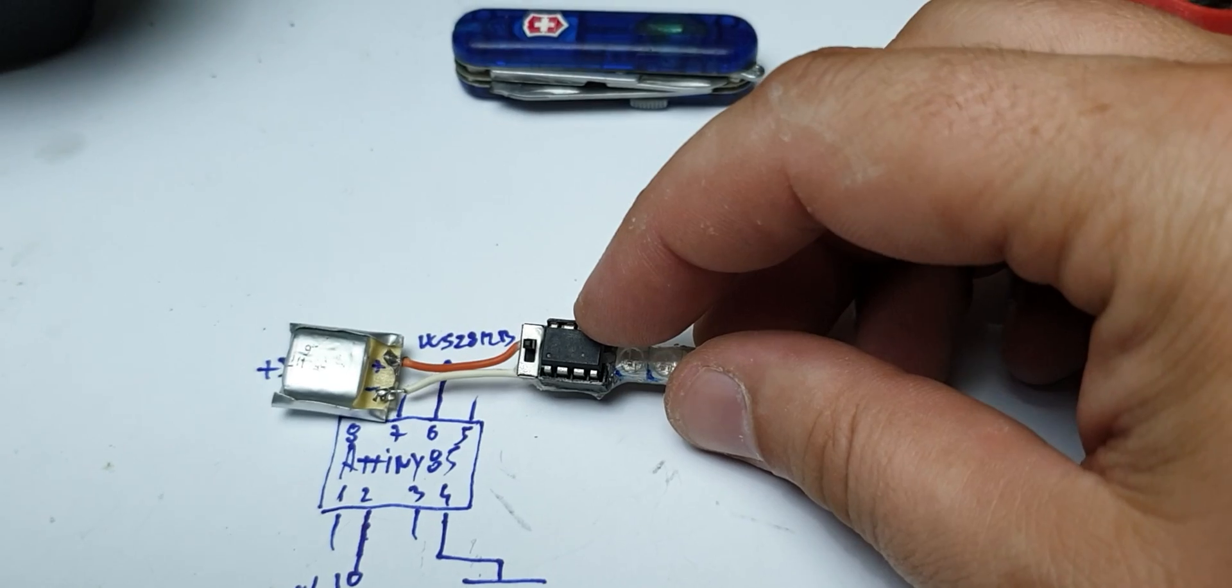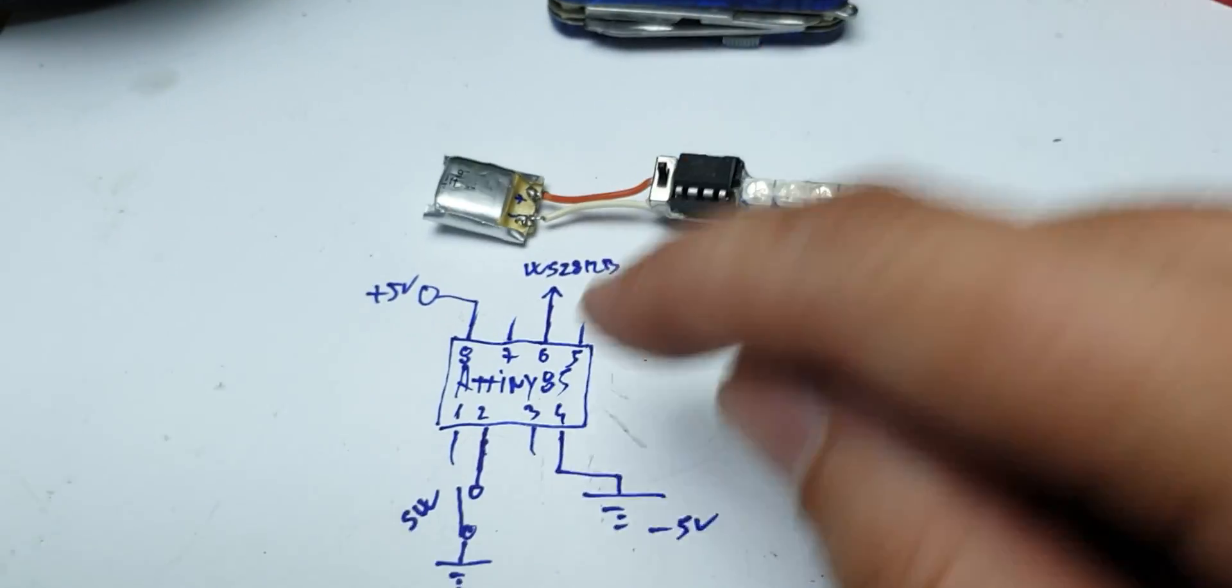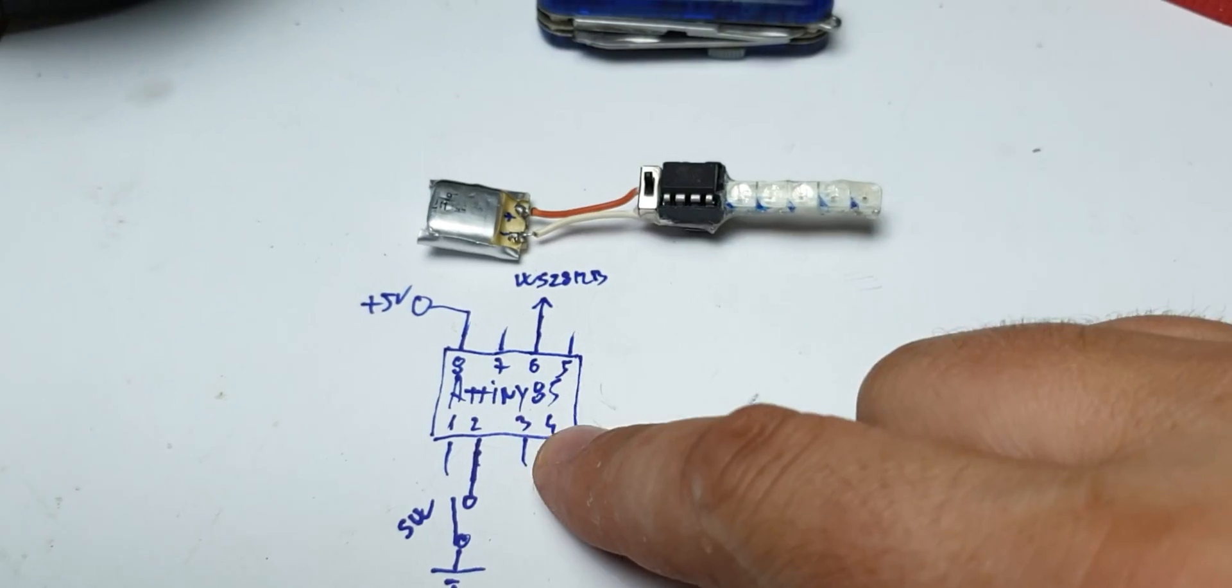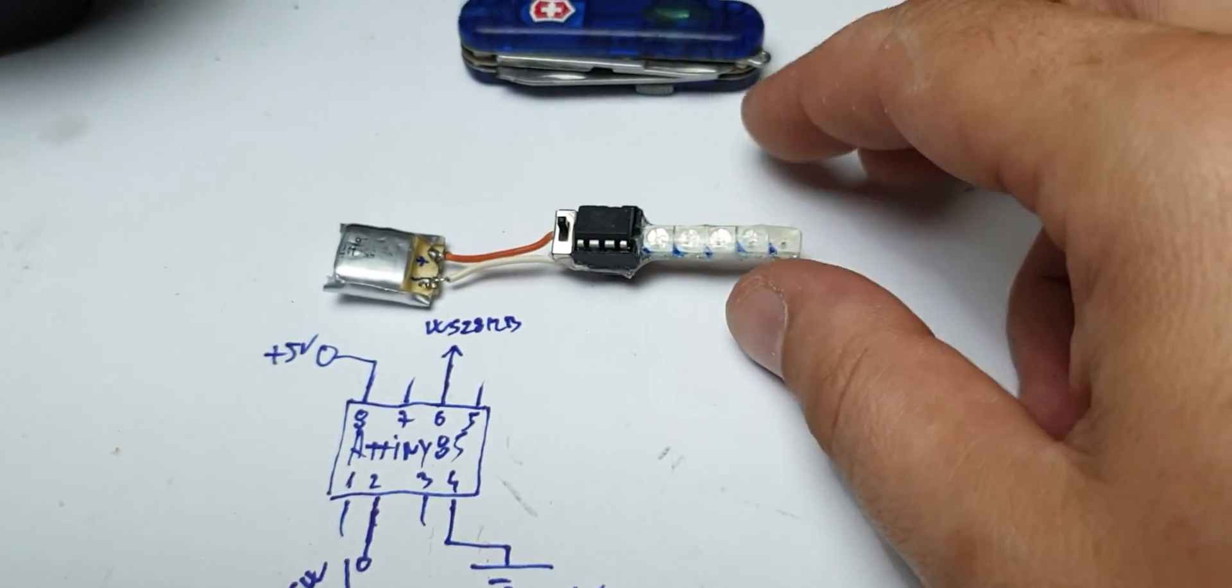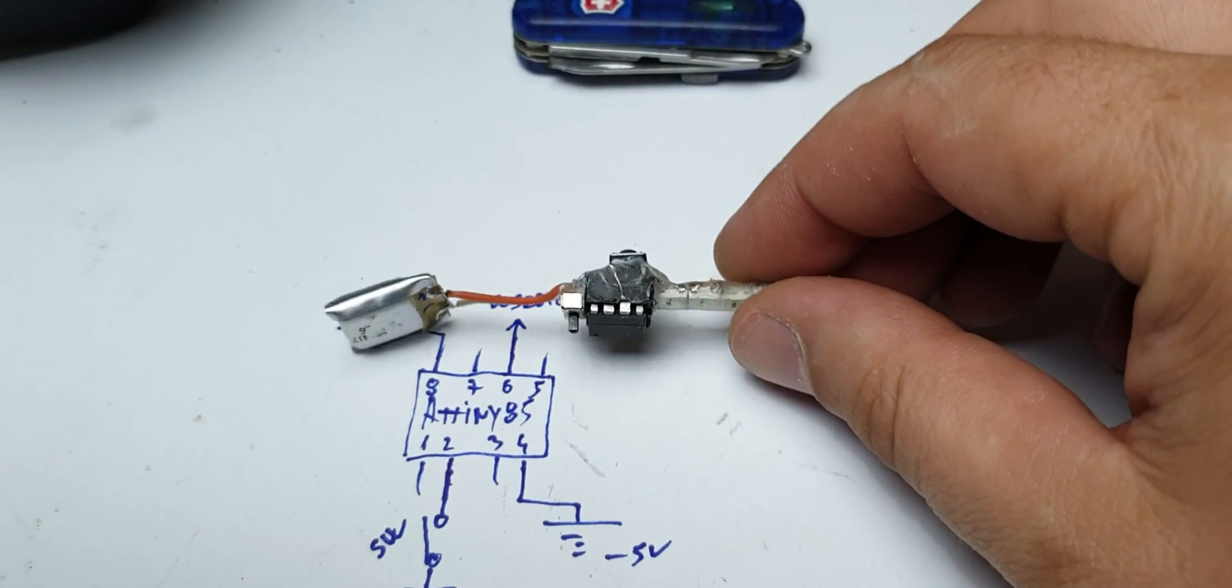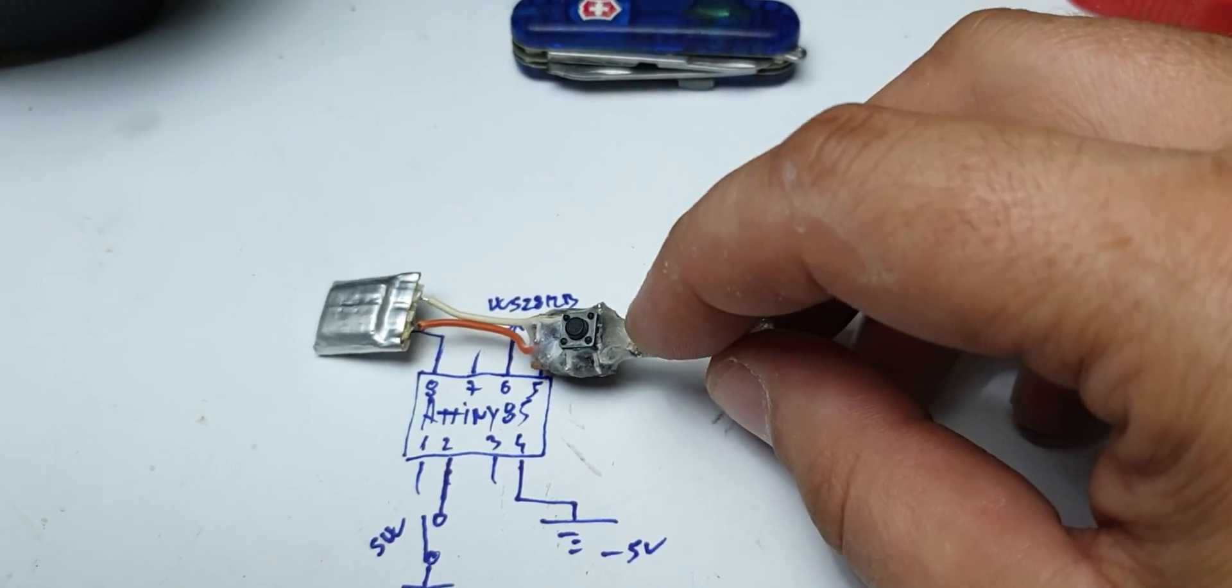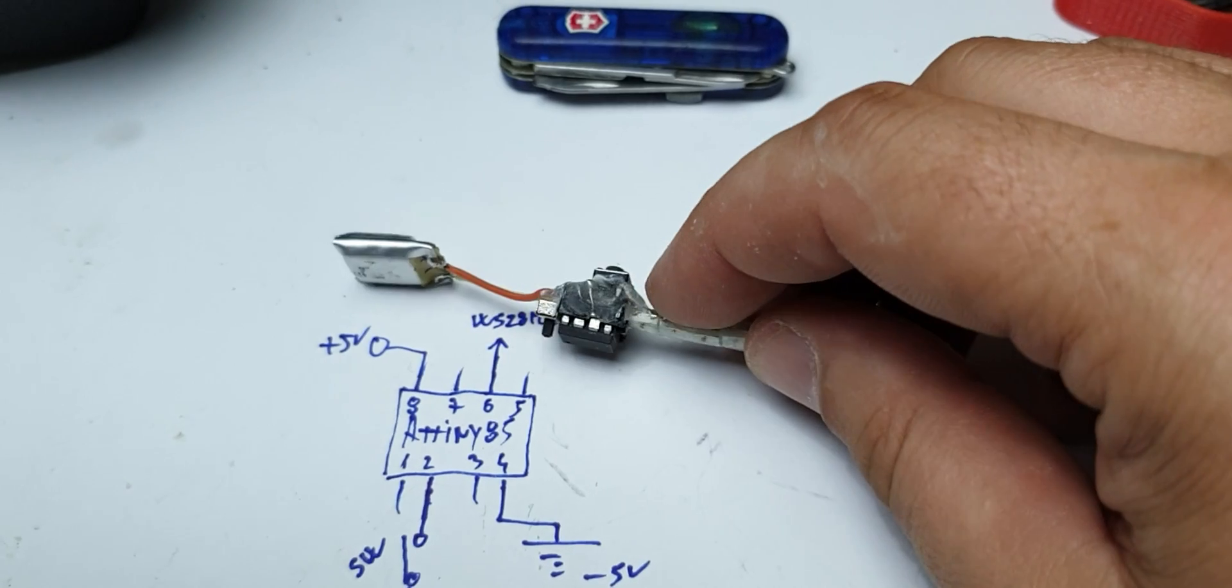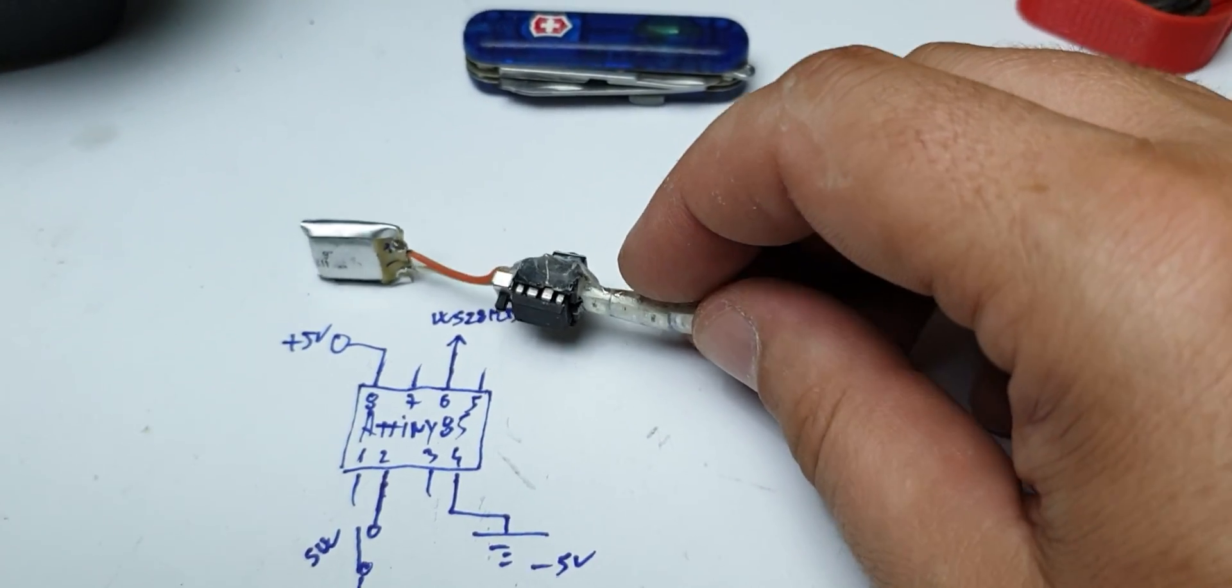And this chip is ATtiny85. And this is the circuit, the code also for this gadget. You can download in the link below. And also behind, I have added a small push switch for selecting the LED mode.